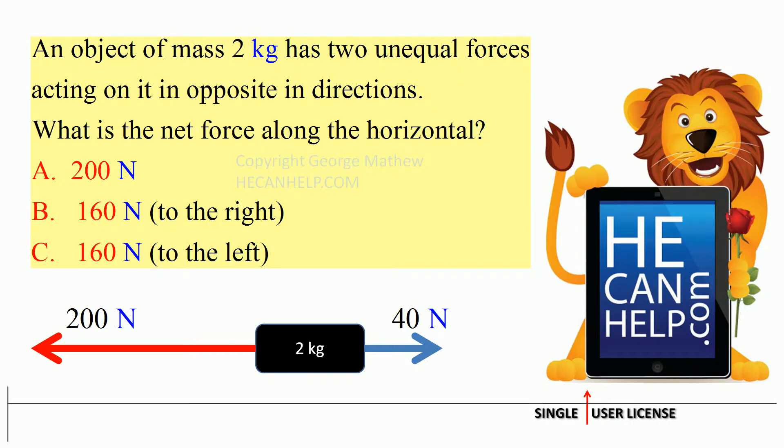When you do the vector sum of forces, what do we get? 40 newtons is to the right, so you have plus 40. 200 newtons is to the left, so negative 200.